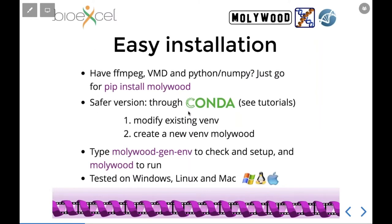Installation is straightforward - you can use regular pip if you have all the dependencies. However, since some dependencies like ffmpeg and VMD are not Python packages, installing through conda is safer and more comprehensive, checking and installing all dependencies in an existing or new virtual environment. We have tutorials on the website. We've tested on Windows, Linux, and Mac - it never runs completely smoothly on Windows, but we made it work. The main command-line tool is called mollywood.